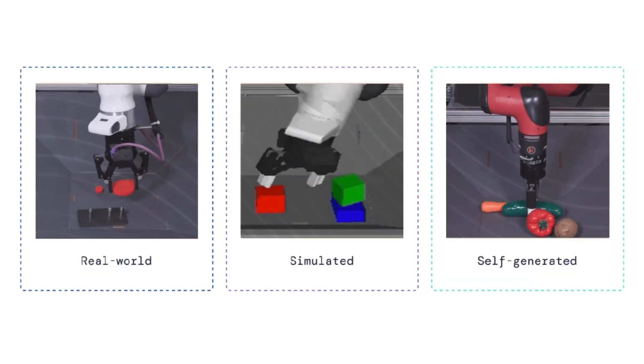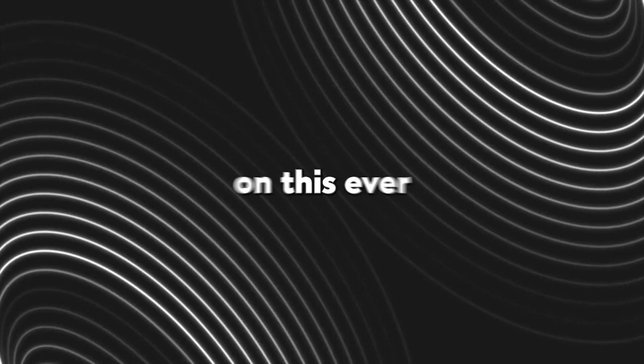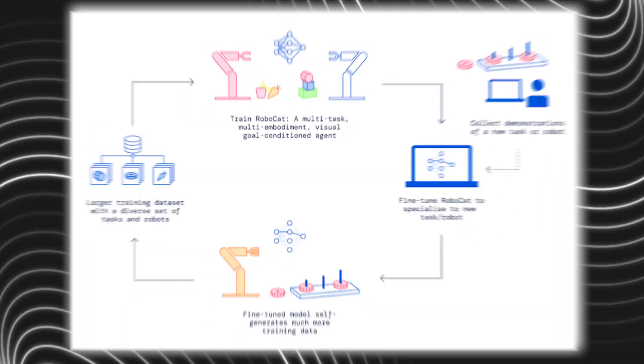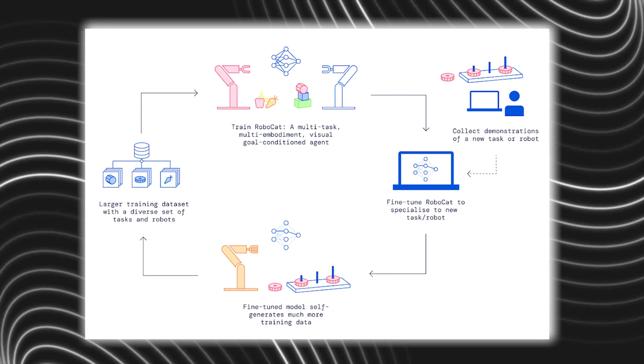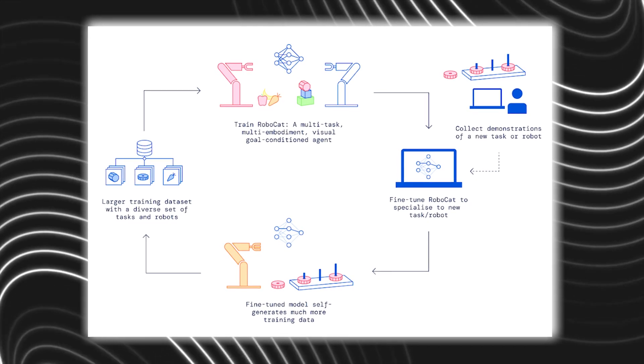And lastly, a new version of RoboCat would be trained on this ever-growing dataset. The kind of data RoboCat is trained on involved simulated, real-world, and self-generated examples.